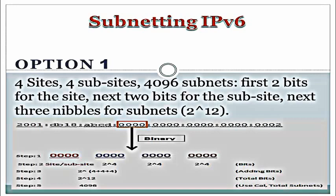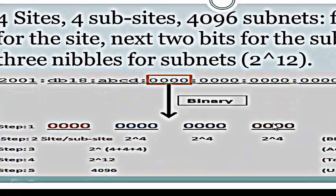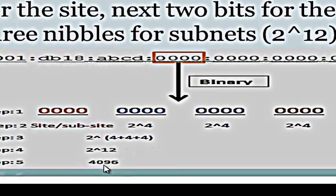Option 1: 4 sites, 4 sub-sites at each site, with 4096 subnets at each sub-site. The first 2 bits are for the site, the next 2 bits for the sub-site — that is the first nibble — and the next 3 nibbles are for subnets, giving 2 to the power of 12. In this example, we take the 4 bits for site and sub-site combined — 2 to the power of 4, plus 2 to the power of 4, plus 2 to the power of 4 — which adds up to 2 to the power of 12. That means all together we have 4096 total subnets in this option.